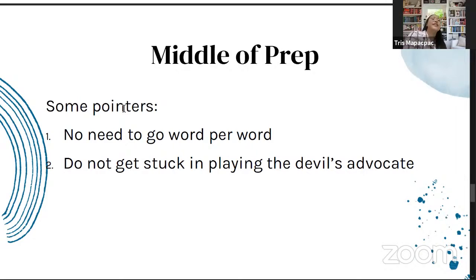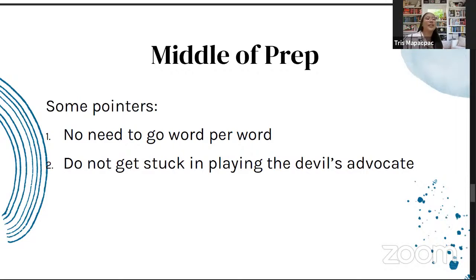The second pointer is: do not get stuck playing the devil's advocate. It's nice to have a preemption, but there's a difference between strategically preempting versus spending half of prep time thinking, 'our opponents may be too good, they might think of better arguments, we don't know how to respond.' Because if you do this, instead of helping the case, it will hurt your team. If you think too much about what the other team will argue or how they will rebut you, you will lose time building your case. Time is very essential in prep, and avoiding these common pitfalls will save you time.